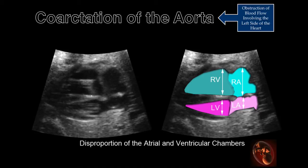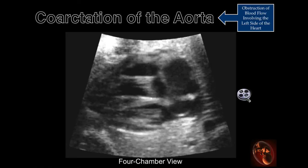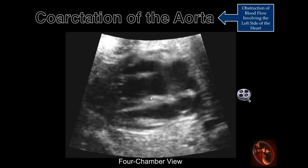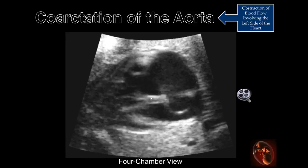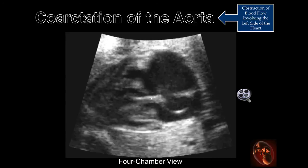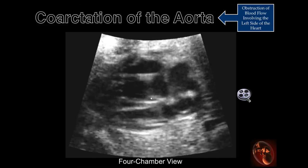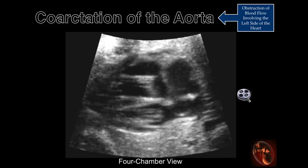Examples of conditions that mimic coarctation include placental dysfunction, abnormal pulmonary venous return, and pulmonary hypertension. This clip illustrates enlargement of the right atrial and ventricular chambers, decreased size of the left atrium and ventricle, and a prominent foramen ovale within the left atrial chamber.